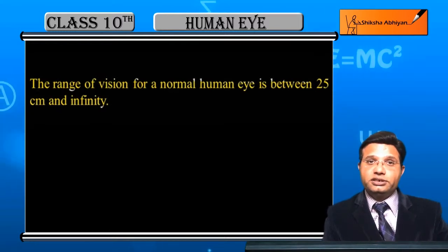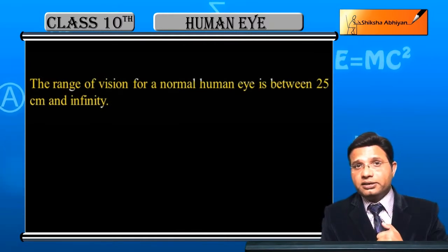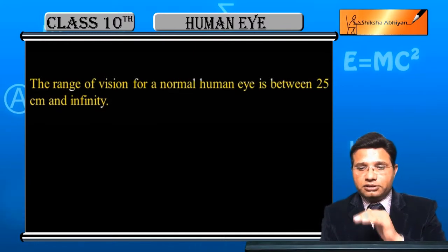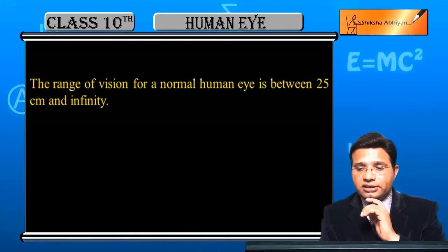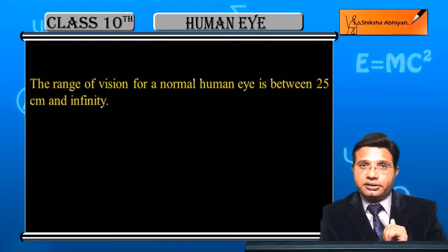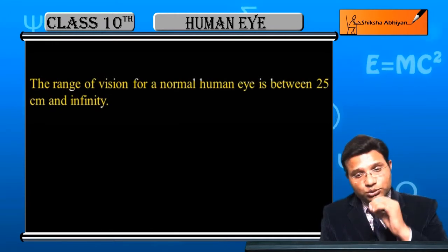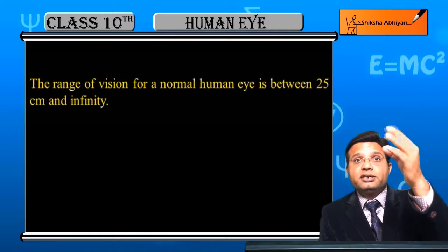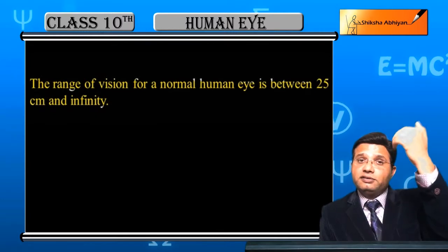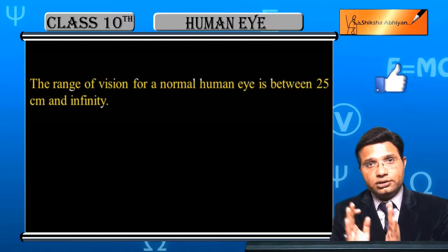अगर defect है तो values change हो जाएंगी। Normal human eye 25 cm से infinity देख पाएगा, लेकिन अगर defect है — मान लीजिए hypermetropic है, मतलब पास की object clearly नहीं दिख रही — तो उसका near point 40 cm होगा, तो वो 40 cm से infinity देख पाएगा। अगर myopic है तो infinity के object देखने में problem होगी — 25 से लेके 80 cm, 100 cm, या 200 cm तक देख पाएगा, लेकिन infinity की चीज नहीं देख पाएगा।